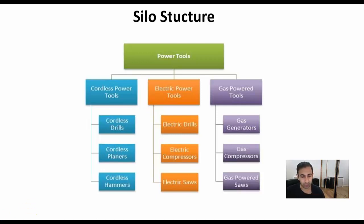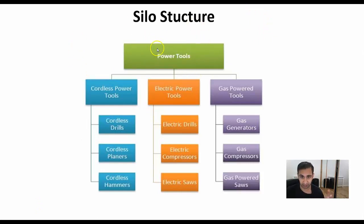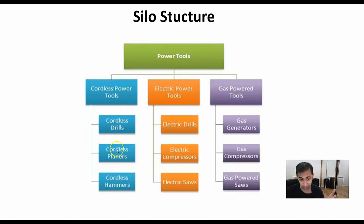This is actually an example taken from the site of Bruce Clay, who is kind of an expert specifically on setting up silo structures. His stuff's a bit advanced but you can check out his website. As you can see, you've got 'power tools' — say for instance you had a business selling power tools, you would split it up accordingly. All the cordless power tools could come under this: drills, planers, hammers. Then you've got drills, compressors, saws, and gas powered in that way.